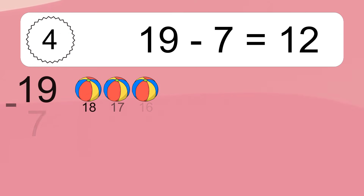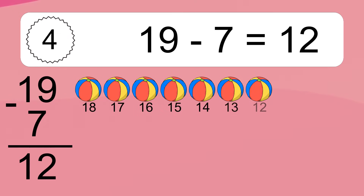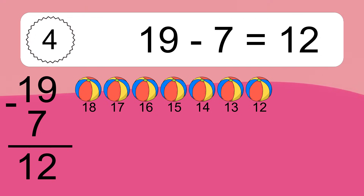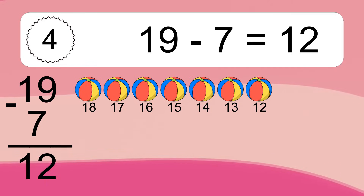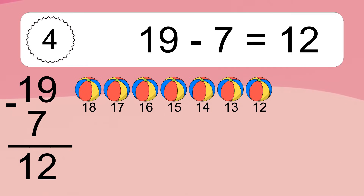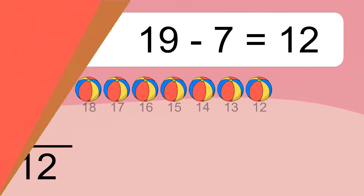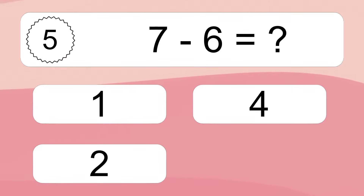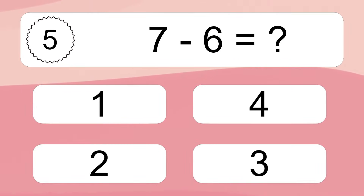19 minus 7 equals what? 19 minus 7 equals 12. Let's count it: 18, 17, 16, 15, 14, 13, 12.